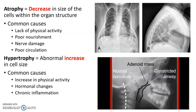Atrophy is a decrease in size of the cells. Common causes include lack of physical activity, poor nourishment, nerve damage, and poor circulation. Hypertrophy is an increase in cell size — something that is larger. If you remember your body habitus: asthenic is your thin, small patient.